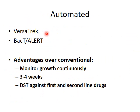Other automated systems available are VersaTREK and BacT/ALERT. Important advantages of these automated methods over conventional include: continuous monitoring of growth, results in approximately 3 to 4 weeks compared to 6 to 8 weeks for conventional, and drug sensitivity testing against first and second line drugs.